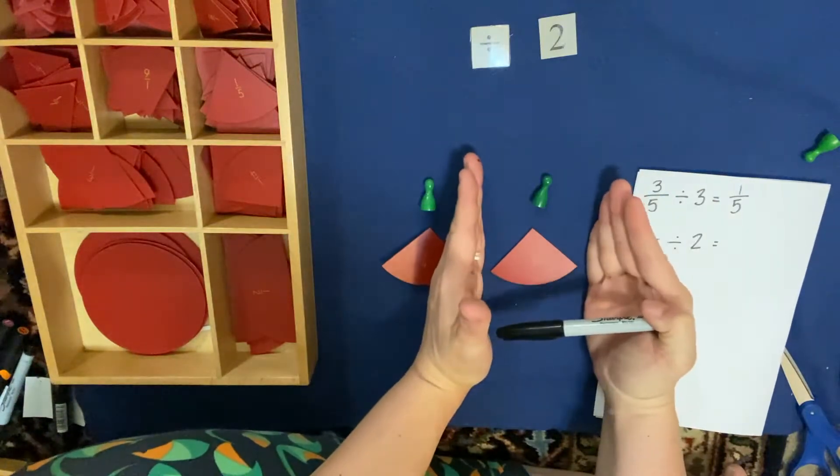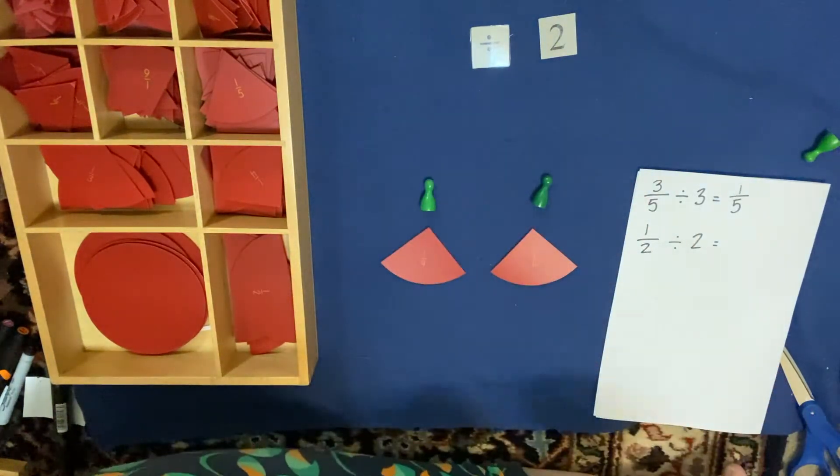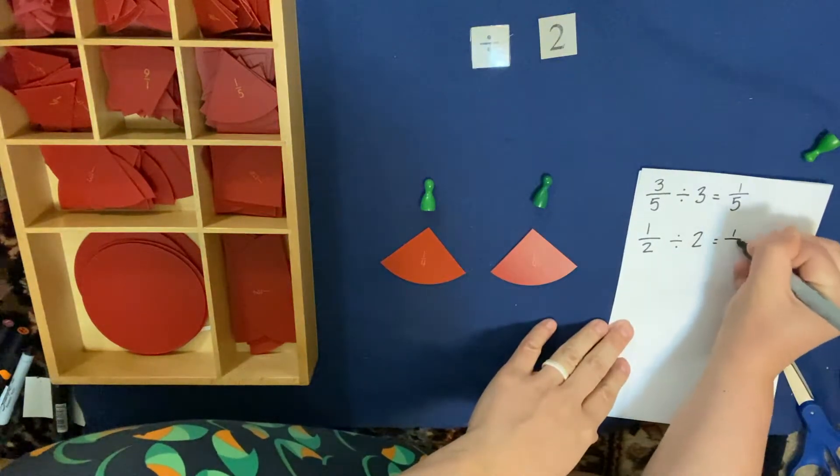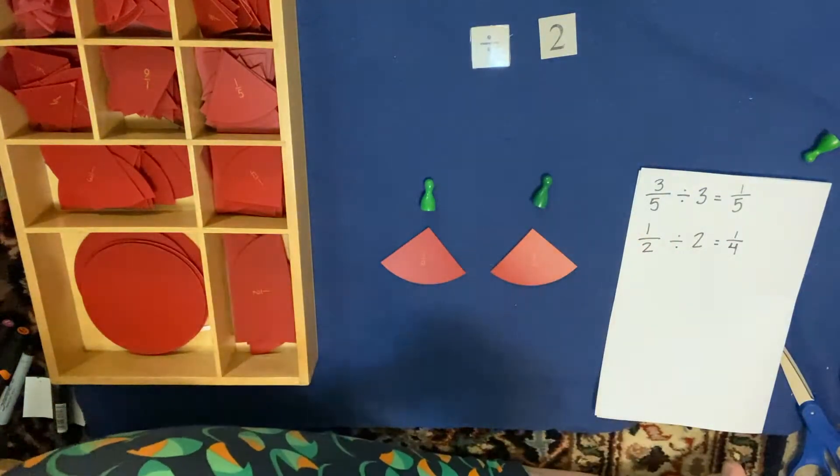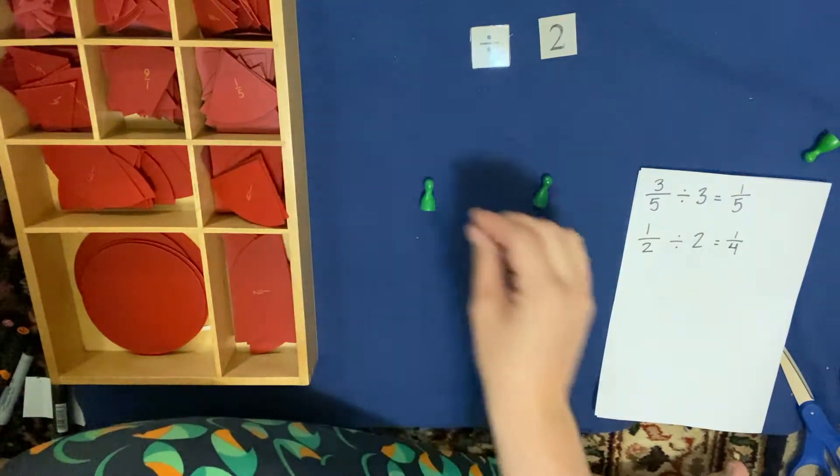So 1 Skittle got how many fourths? 1. Again, each Skittle got 1/4. So the answer is 1/4. Let's do another one.